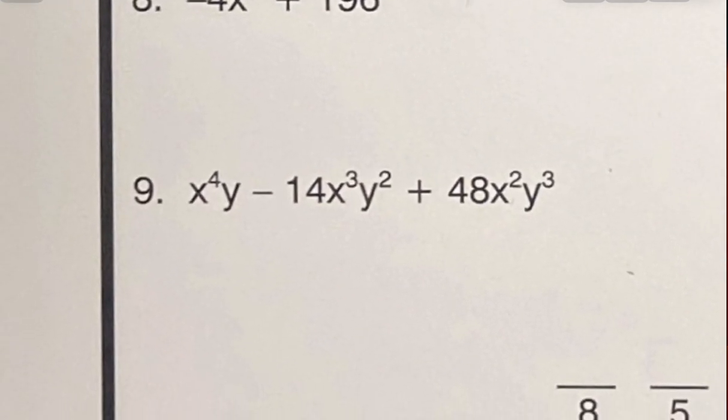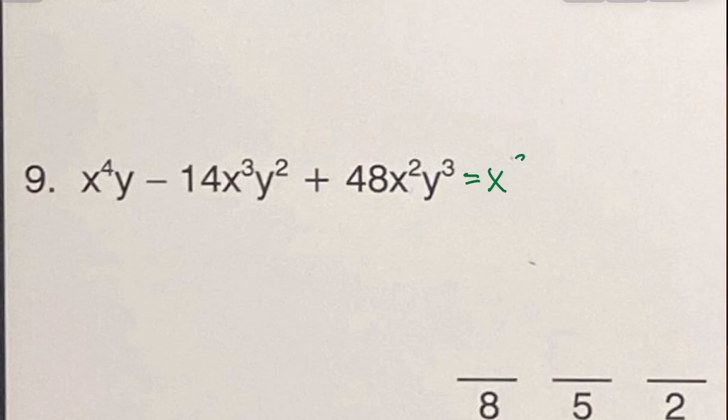Now, to factor a greatest common factor, they all must contain the same variable or a number, a factor within a number. Do they all contain a number out in front? No, that front term does not. But do they all contain X's? Yes. What's our lowest power of X? Two. So let's take that out. Do they all contain Y's? Yes. What is the lowest power we see there? One. So we can take those out.